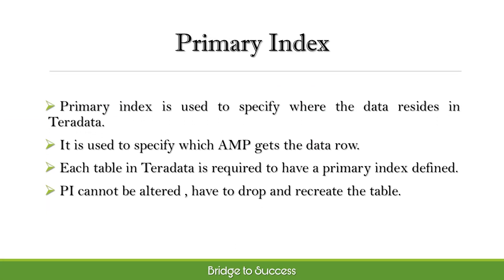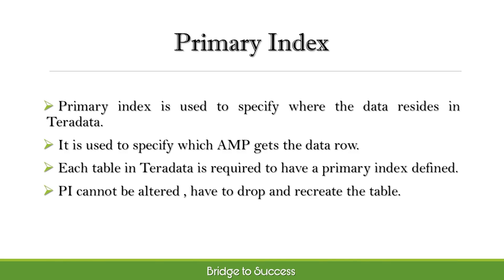Primary index is used to specify where the data resides in Teradata. It is used to specify which AMP gets the data row. Each table in Teradata is required to have a primary index defined. The PI cannot be altered; you have to drop and recreate the table.